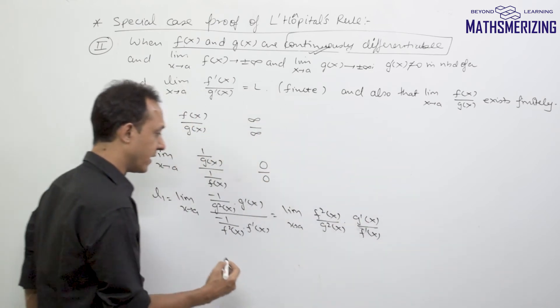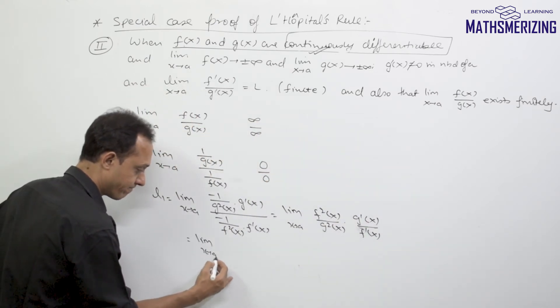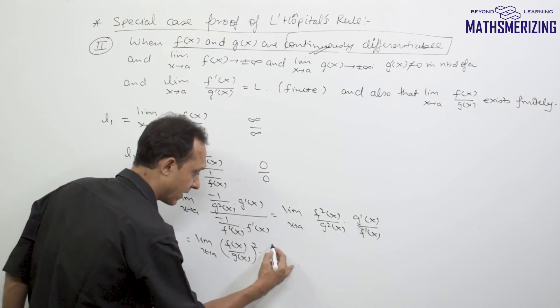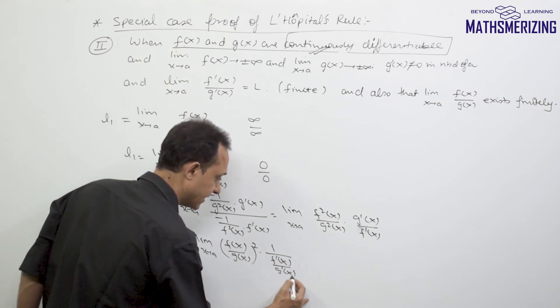So I'll write it as limit x tends to a of f(x) upon g(x) whole square, and then here I'll write it as 1 upon f'(x) upon g'(x).